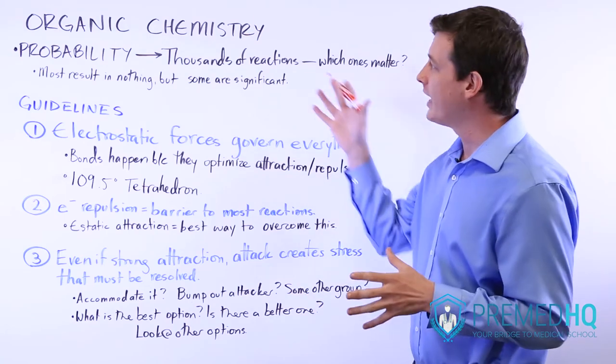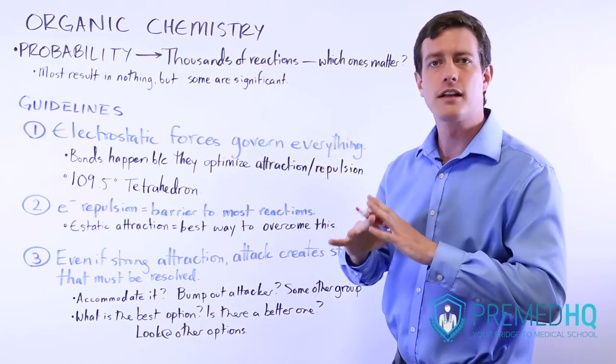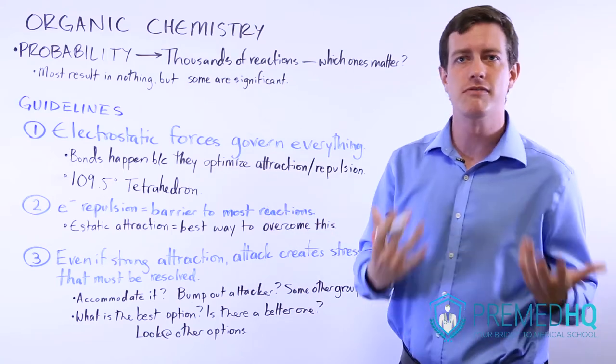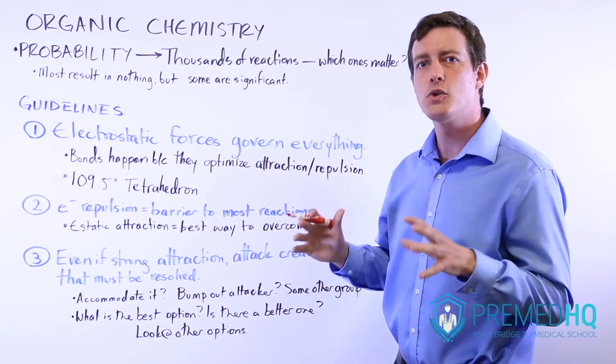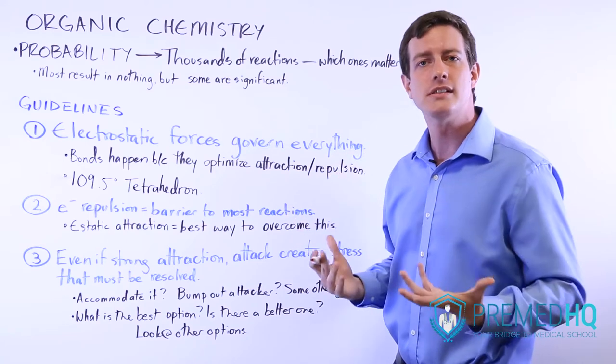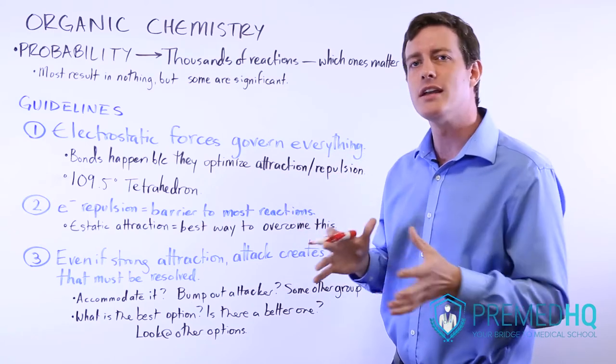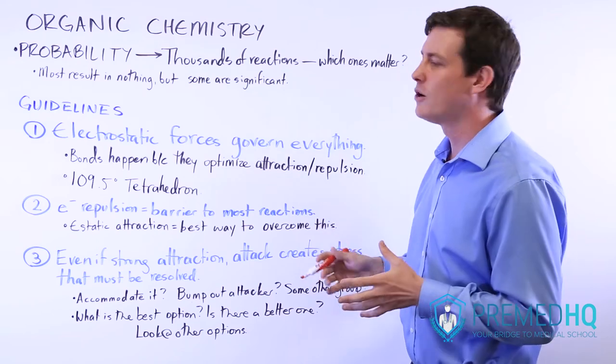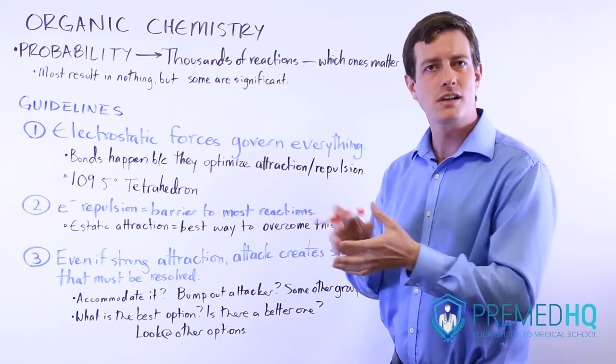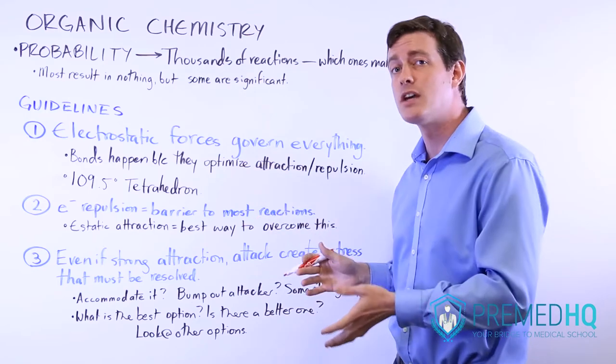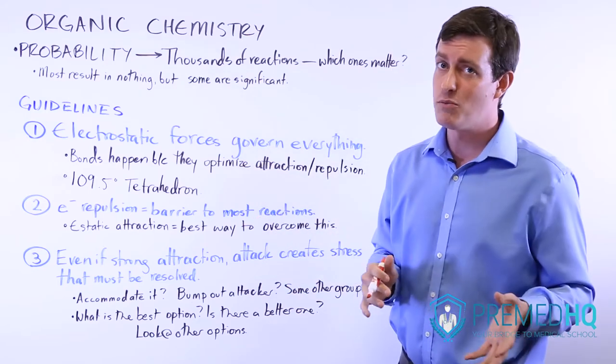Whereas with organic chemistry, you're looking at a complete system with many different reactants, solvents, and thousands if not millions of interactions happening every second. At any given time, you might have thousands or millions of molecules colliding with each other. Some will interact, a lot won't.